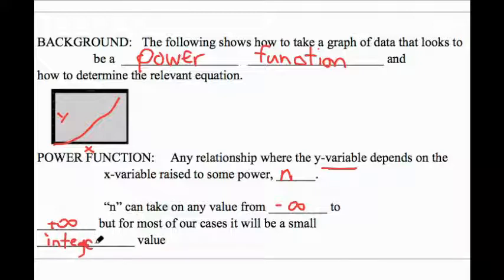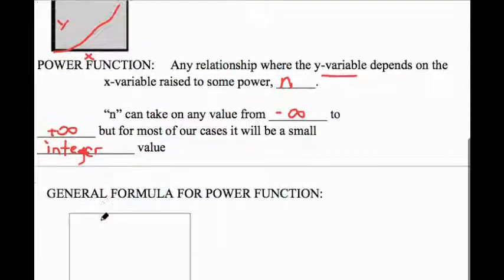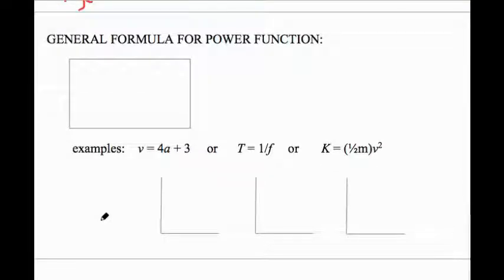The general form of a power function is pretty straightforward: some y variable is equal to a constant k, a number—that number could be a measurement but it's essentially something that's not changing in the experiment—times your x variable, your independent variable, raised to some power n. Ultimately what we want to solve for is the n, and you can find out what the k is as well. For example, if we had a generic equation v = 4a + 3 and we were to plot v versus a, this is a power function where a is to the first power, and of course we'd expect a straight line.